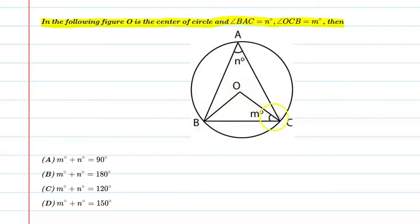Now, this is triangle OBC. OB is equal to OC because the lines from center to circumference are radii. So OB and OC are equal sides, and the angles opposite to equal sides are equal. So we can say that angle OBC is also equal to m.